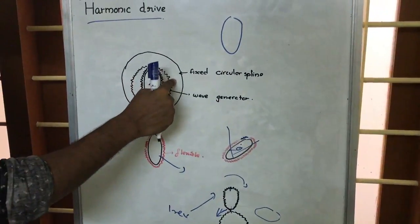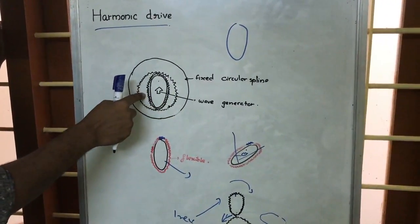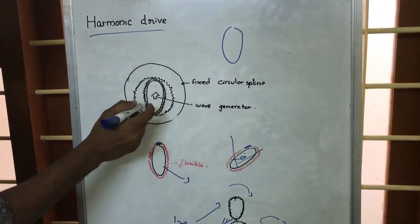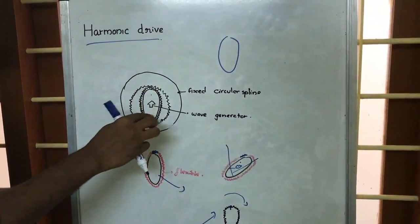So we have a circular spline here, we have a flexible spline which is kept over an elliptical casing. Then this is the wave generator—wave generator is rotating...